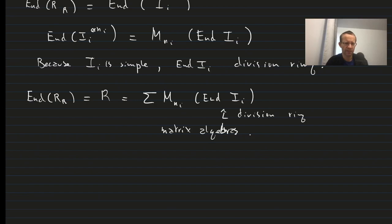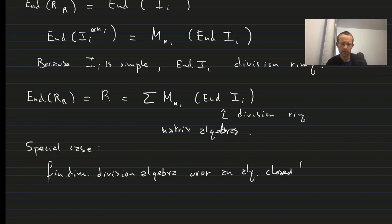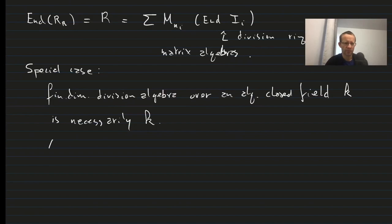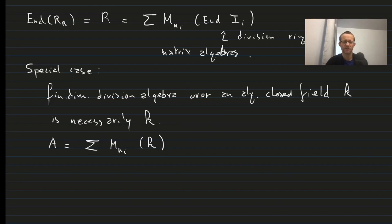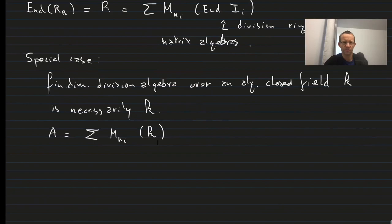There is an important special case in which we have a finite dimensional division algebra over an algebraically closed field like C. And then such a finite dimensional division algebra is necessarily the field itself, and therefore in this case the algebra A over this algebraically closed field K is just the sum of matrix algebras over K, because we have a finite dimensional division algebra which is this endomorphisms of simple ideals.